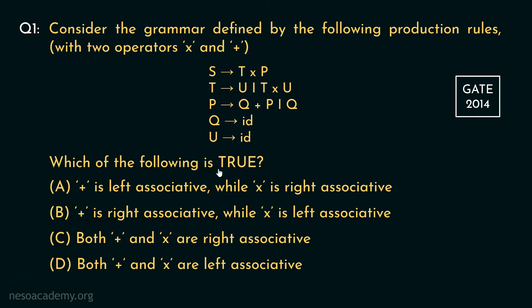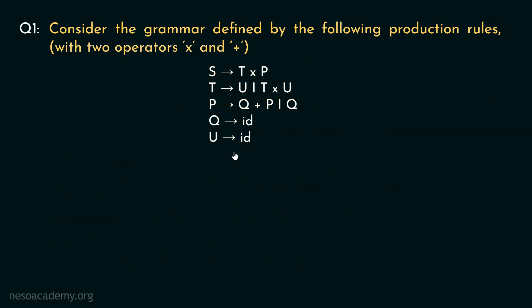We are supposed to figure out which one of these options is true. Before we dive down to the options, let's examine the production rules carefully. Observe the operators. You know that looking at the production rules at once, we can figure out the precedence order, right?